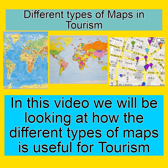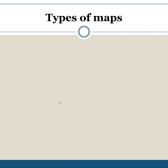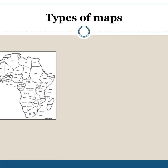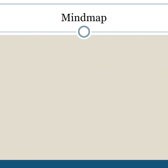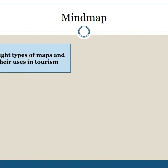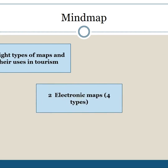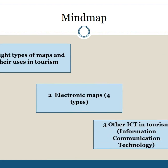In this video, we will be looking at how different types of maps are useful for tourism. Today in class, we will be discussing the different types of maps. We get 8 types of maps and their uses in tourism. We also get electronic maps, and there are 4 different types. Other ICT — information communication technology — that you get in tourism is also covered.